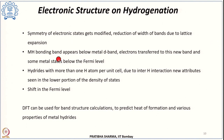The electronic structure also changes on hydrogenation. The symmetry of electronic states is modified and the bandwidth reduces due to lattice expansion. A new metal-hydride bonding band appears below the metal d-band, electrons transfer to this new band, and some metal states form below the Fermi level. For hydrides with more than one hydrogen atom per unit cell, inter-hydrogen interactions produce new features in the lower portion of the density of states, and a shift in the Fermi level is also observed. DFT band structure calculations can determine the heat of formation and other properties such as mechanical properties of metal hydrides.